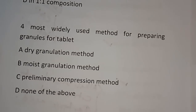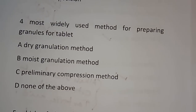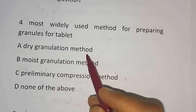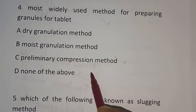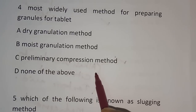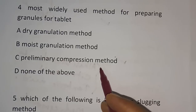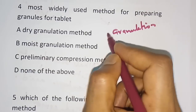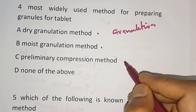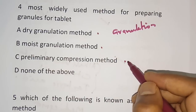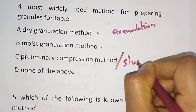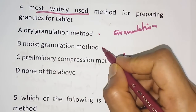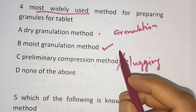Question number 4: The most widely used method for preparing granules for tablets. Options are dry granulation method, moist granulation method, preliminary compression method, or none of the above. Granulation can be done by three methods: dry granulation, moist granulation, and preliminary compression (slugging). The most widely used method is the moist granulation method, where powdered medicament and excipients are moistened with a sufficient quantity of granulating agent.